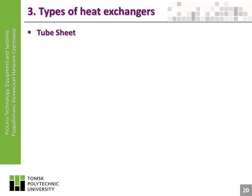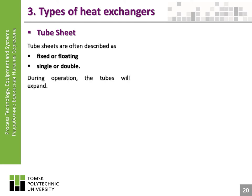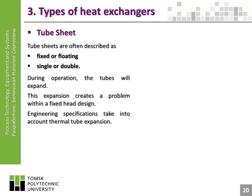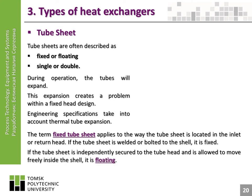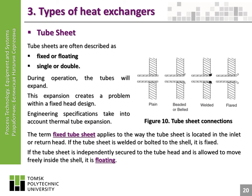Tube sheets are often described as fixed or floating, and single or double. During operation, the tubes will expand, creating a problem within a fixed head design. Engineering specifications take into account thermal tube expansion. The term fixed tube sheet applies to the way the tube sheet is located in the inlet or return head. If the tube sheet is welded or bolted to the shell, it is fixed. If the tube sheet is independently secured to the tube head and is allowed to move freely inside the shell, it is floating. Sheet connections include plain, beaded or belled, welded, and flared.